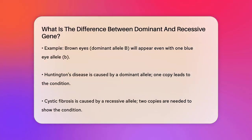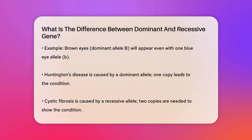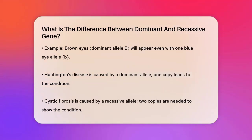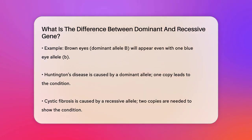On the other hand, a recessive allele is like the quiet voice in the room — it only gets heard if there's no loudspeaker around. You need to have two copies of the recessive allele to show the trait. Using the eye color example again, if you have two b alleles — bb — then your eyes will be blue.